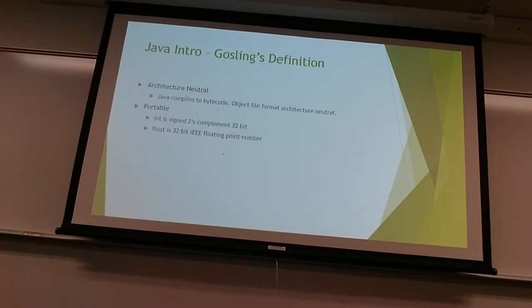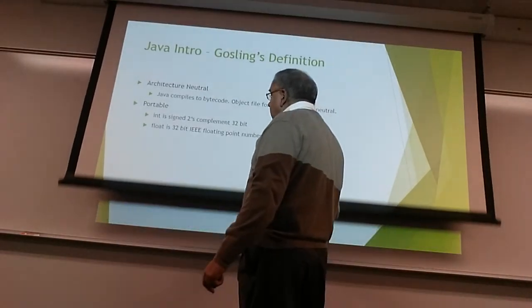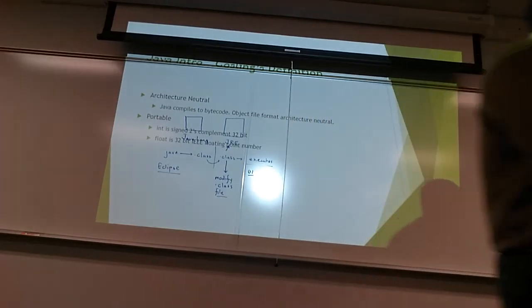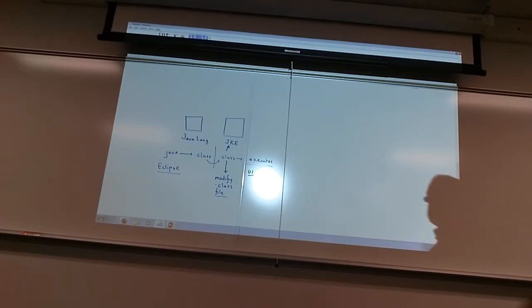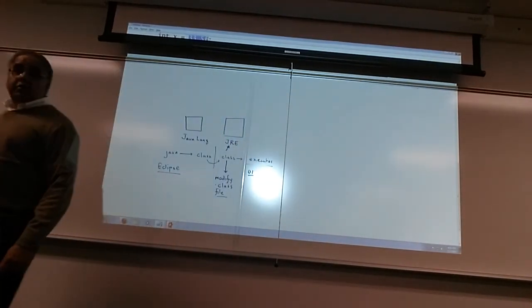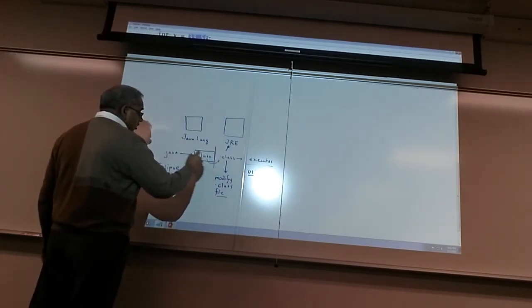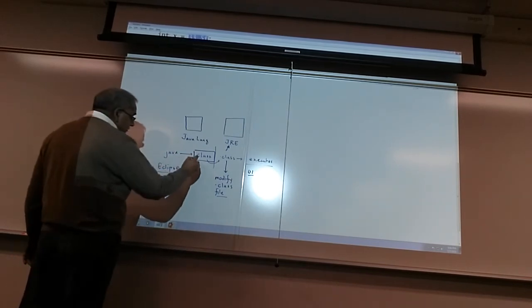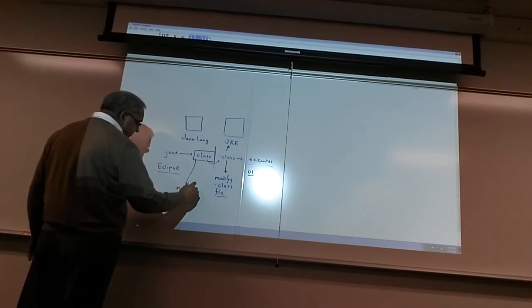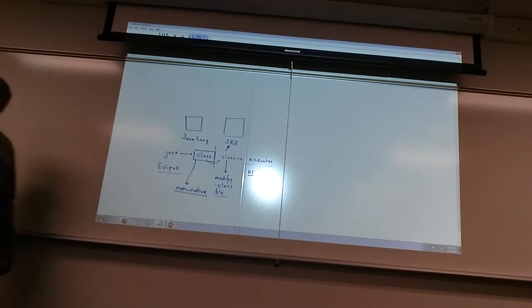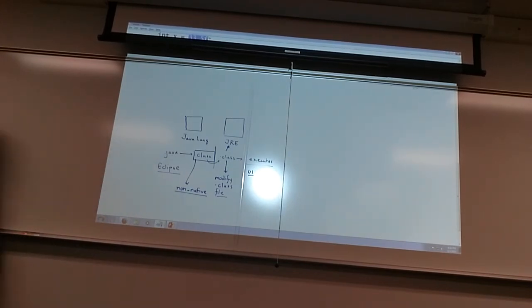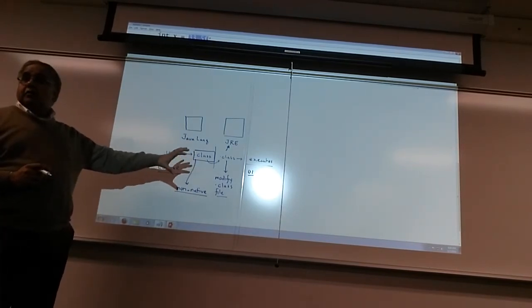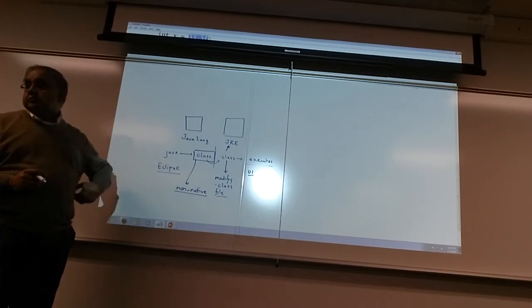Architecture neutral — you write a Java program on the Mac, you can run it on Windows or Unix. Architecture neutral, as long as there is a Java Virtual Machine to run it. Going back to the diagram: you write a program, and that binary is called the .class file. The .class file is non-native — not for one operating system or hardware architecture — it can be used anywhere.